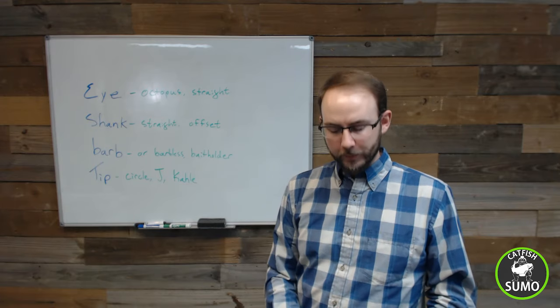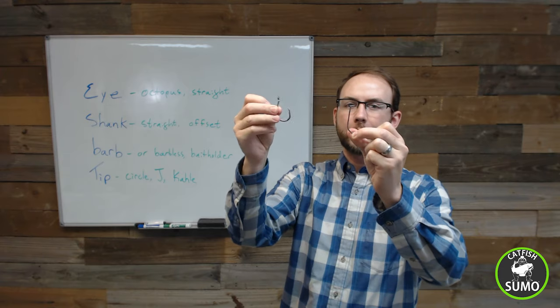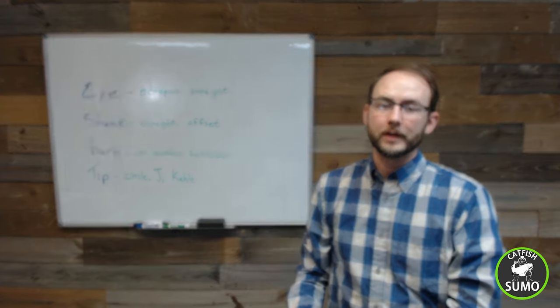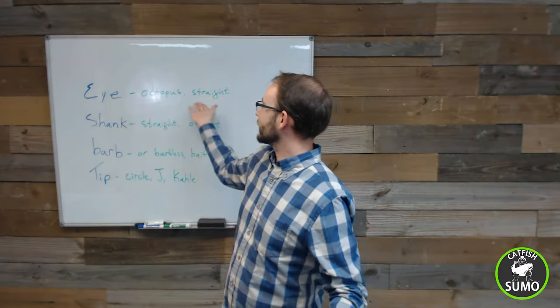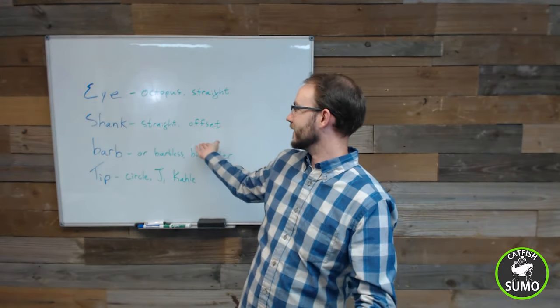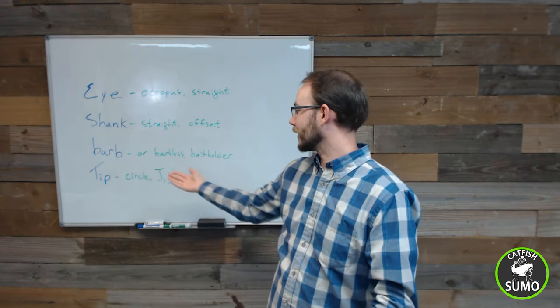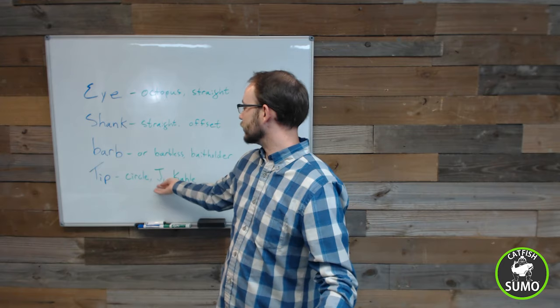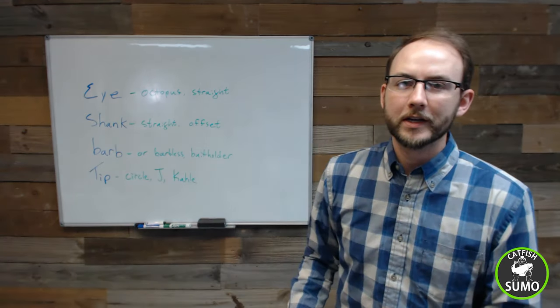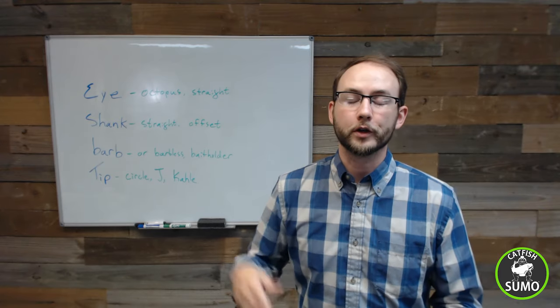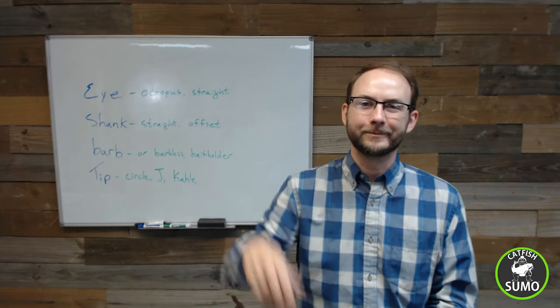So hopefully this was helpful. I hope that as you go out and you discuss and you decide on the kinds of hooks, now you're armed with the right information. And now you can intelligently decide within each of these categories, should I go straight or octopus eye? Should I go with an offset or a straight shank? Should I go with a bait holder, a barbless, or a barbed hook? Should I use a circle tip, a J tip, or a kale tip? So thanks you guys for watching. Now you can go out and use this information. You can show some people up. You can tell them why they're wrong. And now you can discuss it intelligently. Thanks guys, see you.